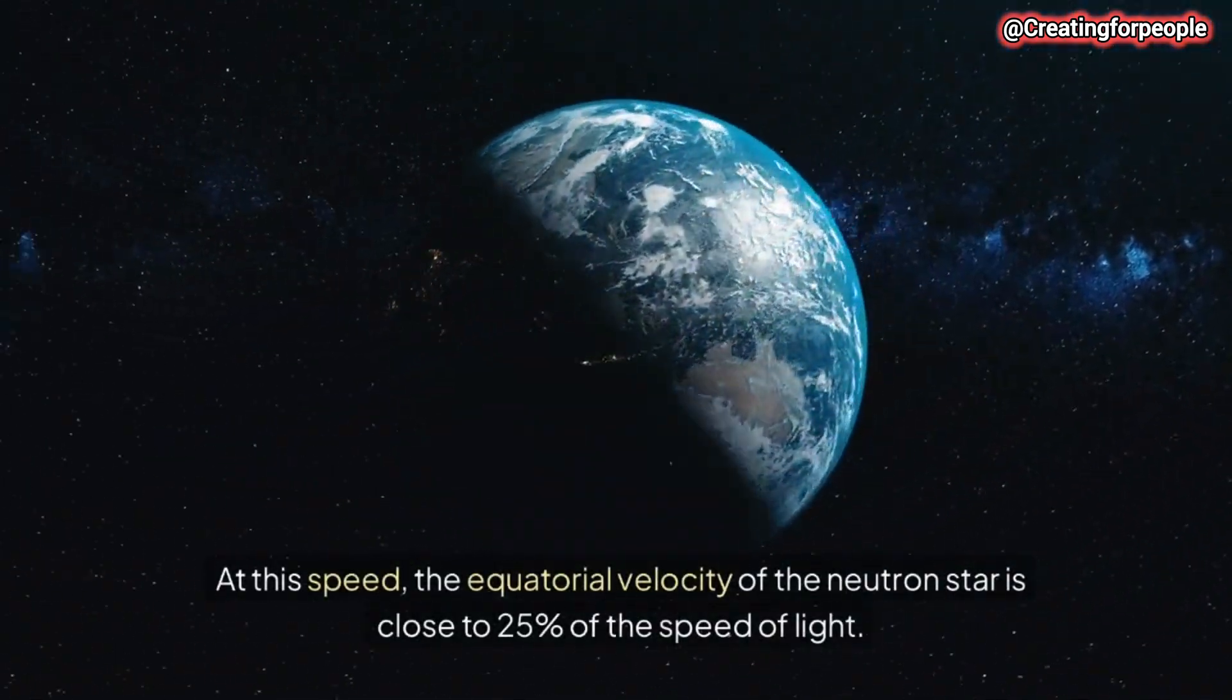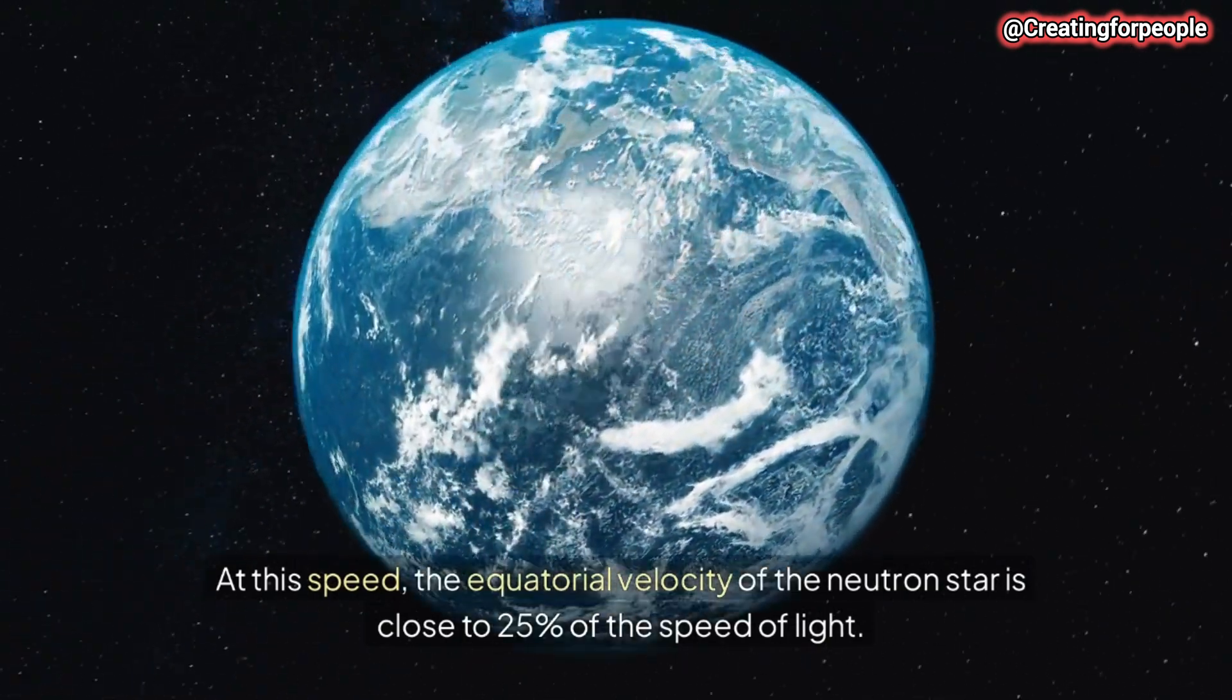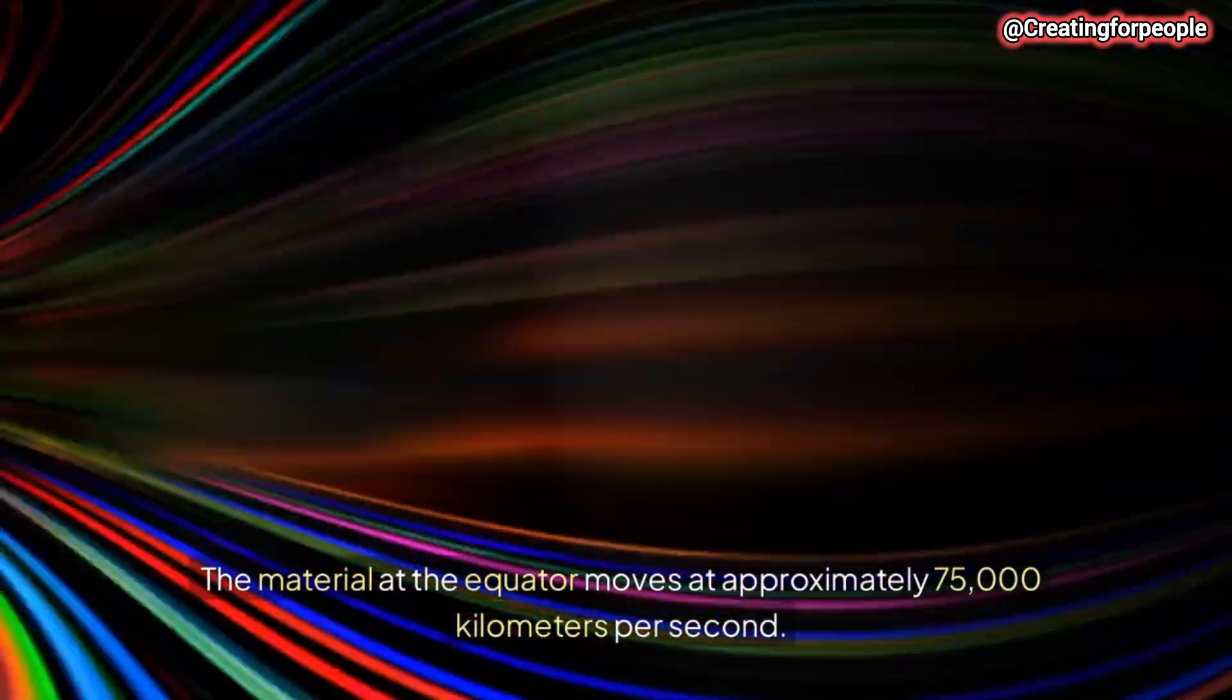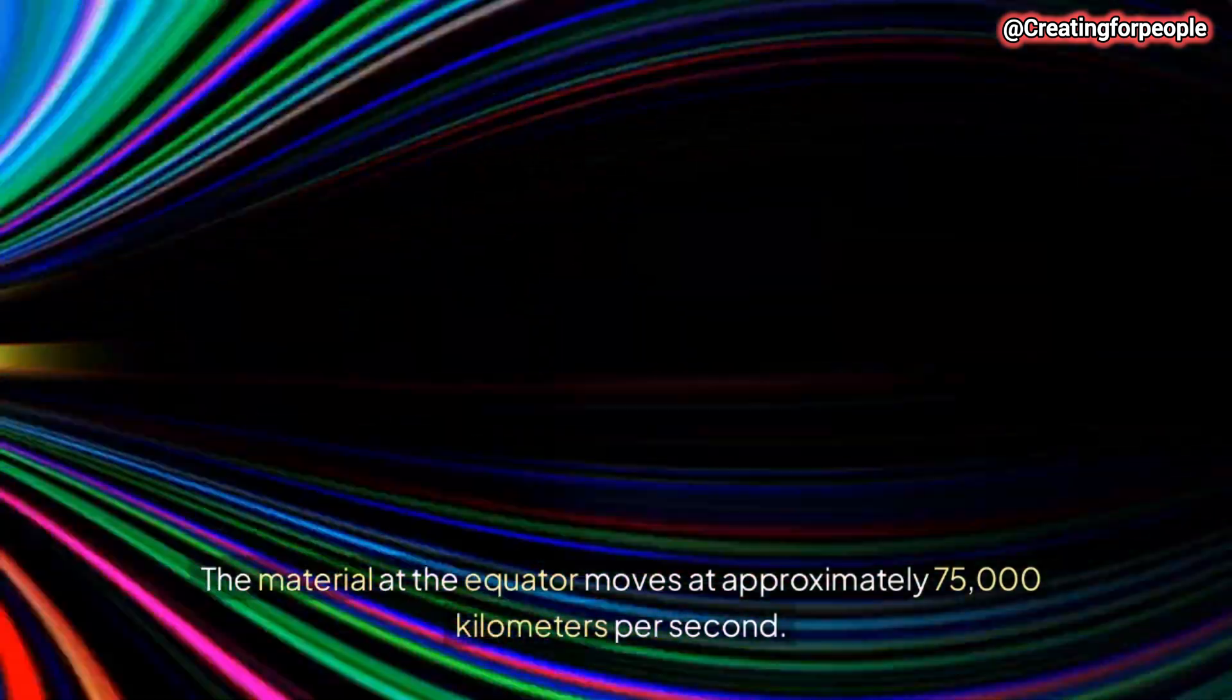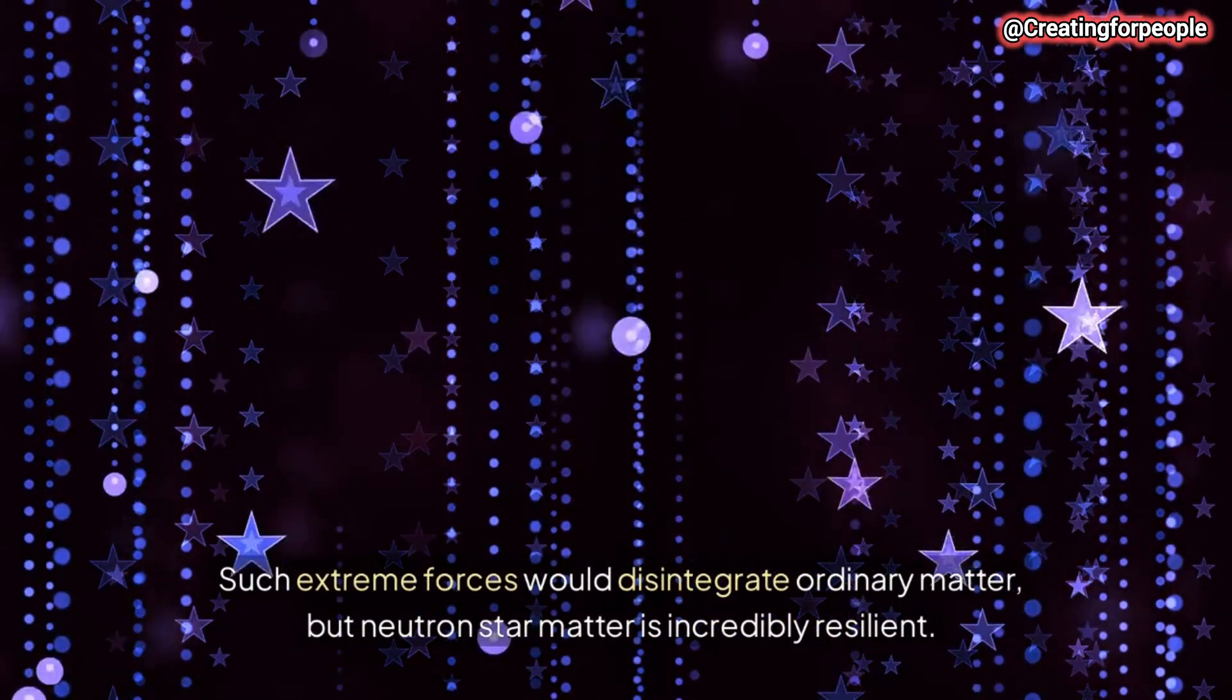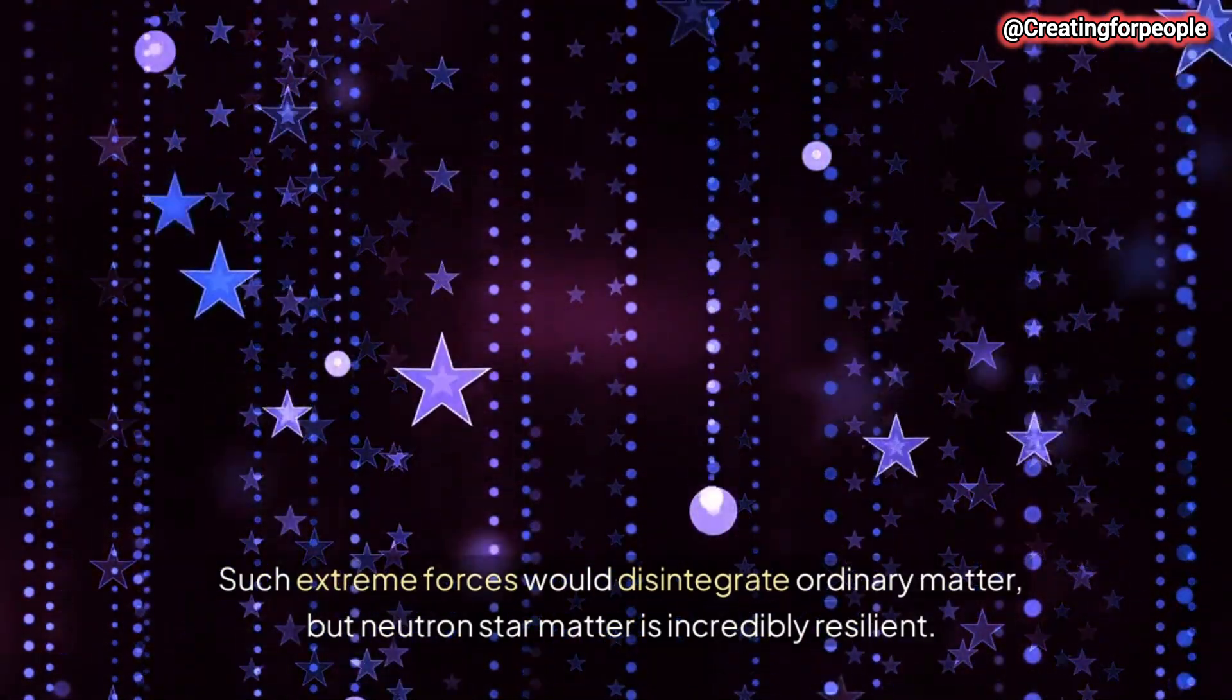At this speed, the equatorial velocity of the neutron star is close to 25% of the speed of light. The material at the equator moves at approximately 75,000 kilometers per second. Such extreme forces would disintegrate ordinary matter, but neutron star matter is incredibly resilient.